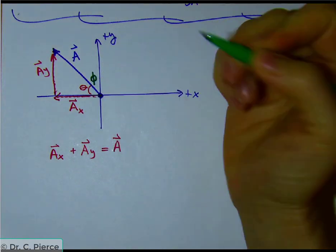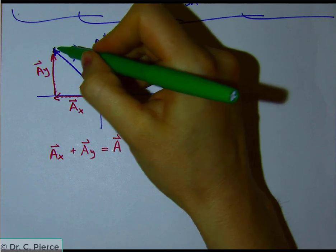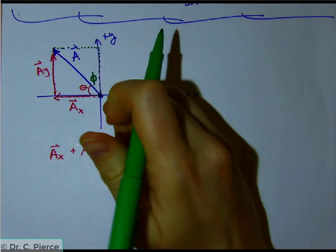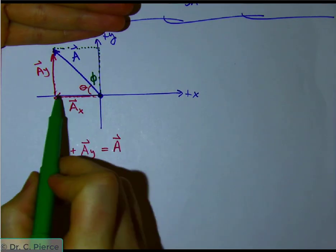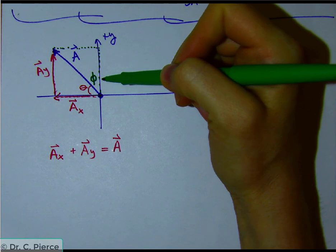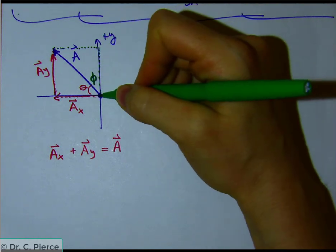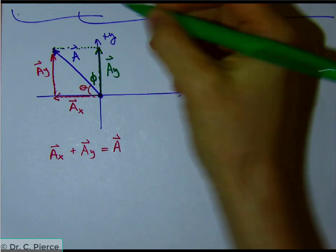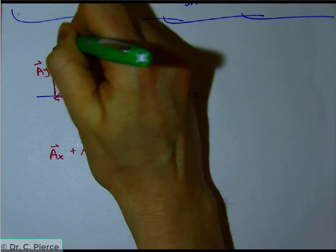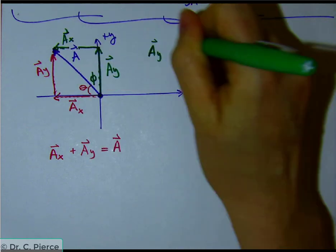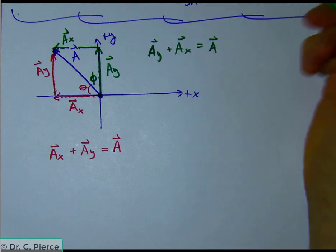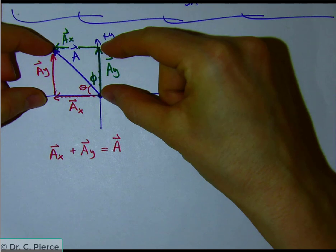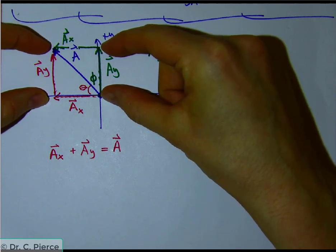It would also have been fine if you had looked at this angle — let's call it phi — and decided to make your right triangle this way. Again, the pieces of the right triangle have to be parallel to the coordinate system. So this one is parallel to x and this one is parallel to y. To get from the beginning to the end of our arrow a, we could have ay plus ax equal to a. These are the exact same thing because the order of addition doesn't matter.